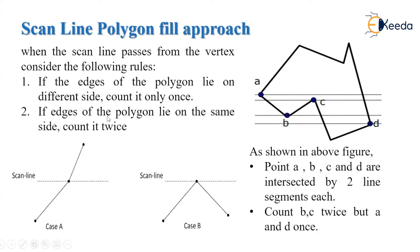Rule 2: if the edges of the polygon lie on the same side, then count it twice. As seen in case B, the scanline passes through the vertex and both polygon edges lie on the same side, so we consider it twice.